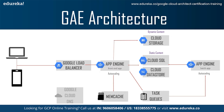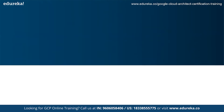In addition, Google App Engine also has static and dynamic storage solutions. The static storage solution provides the file storage service called Cloud Storage, whereas the dynamic storage solution provides relational database services such as Cloud SQL, and non-relational NoSQL such as Cloud Datastore.